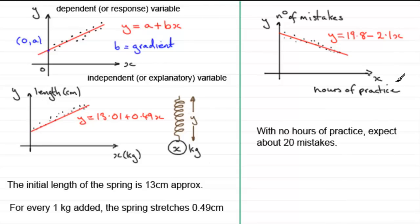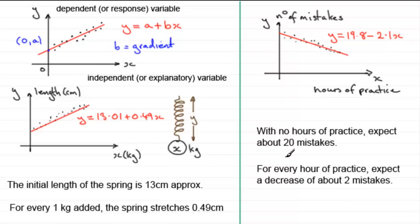For 2.1: it's negative, consistent with the downward-sloping line. For every one hour of practice, the number of mistakes decreases by 2.1 in theory — but since you can't have a fraction of a mistake in practice, we say: for every hour of practice, expect a decrease of about 2 mistakes. That demonstrates how we interpret the values of a and b in context, and the meaning of independent and dependent variables.